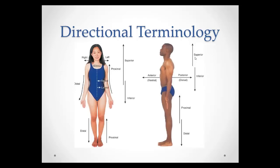Medial means toward the midline. The nose is medial to the eyes because it's closer to the midline. The ears are lateral to the eyes. Note that there can be more than one correct answer — the ears are both posterior and lateral to the eyes. Medial means toward the midline, and lateral means away from the midline, assuming anatomical position.